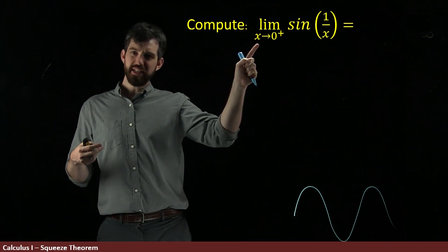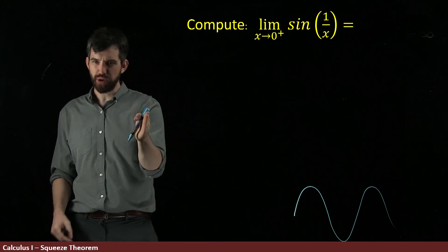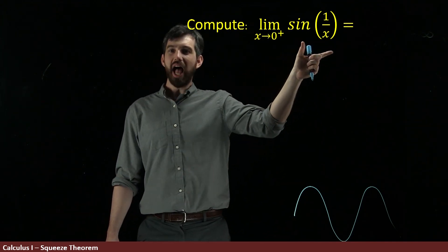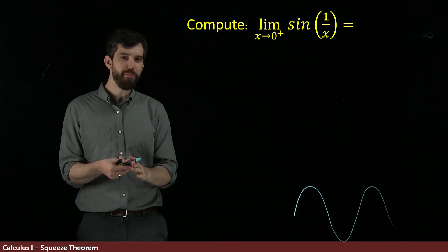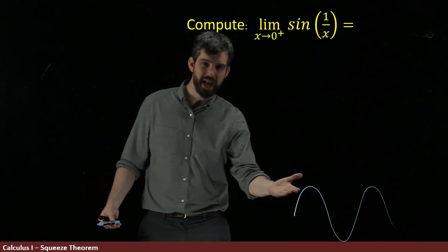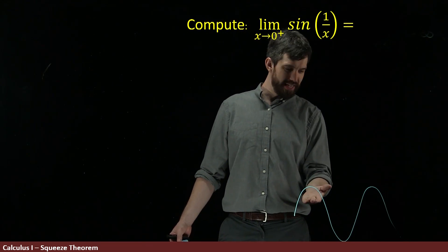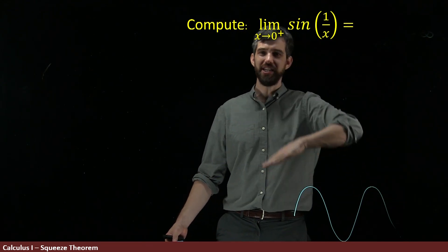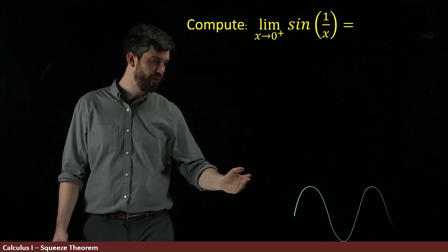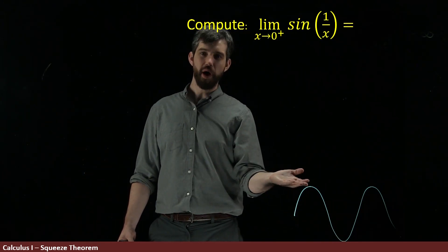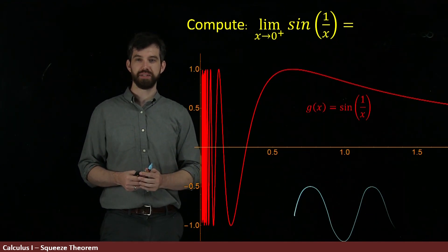As x gets closer and closer to zero, what's inside the sine gets really really big. But if I think about what happens as the input to sine gets really big, sine of x itself just keeps going up and down between minus one and one. So I think the graph is going to look a little something like this.